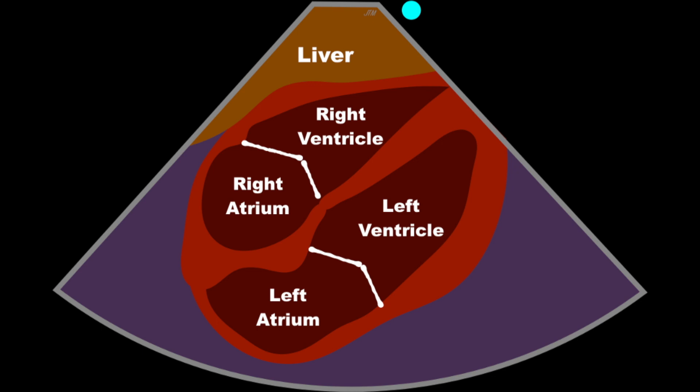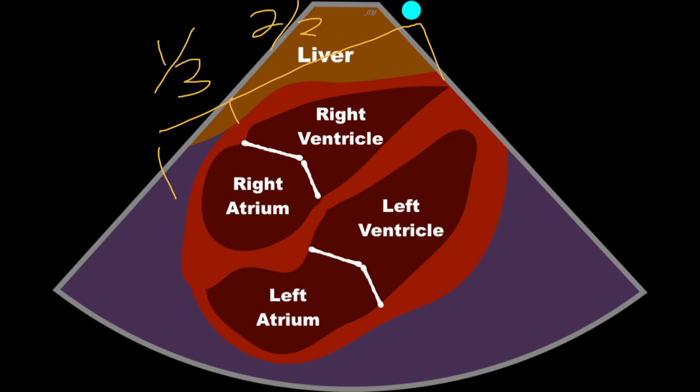We can also look at the entire length — this should be about a third of the whole length, and the ventricle should be two-thirds. If the atria is enlarged, it will take up more than that third of the whole that we should be giving it, and that would be a concern for enlargement, whether that be the right atrium or the left atrium when compared to the ventricles.